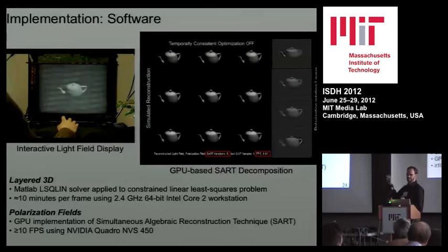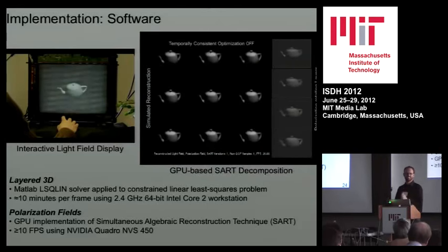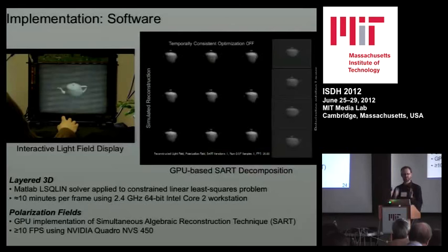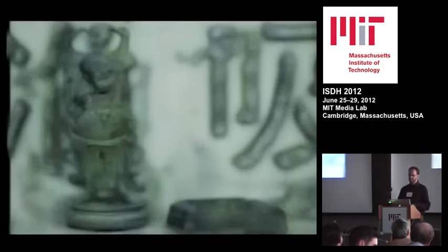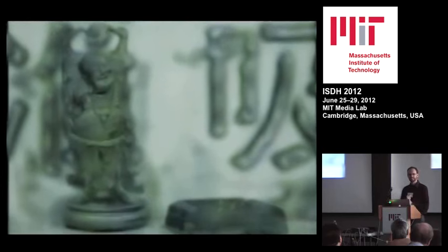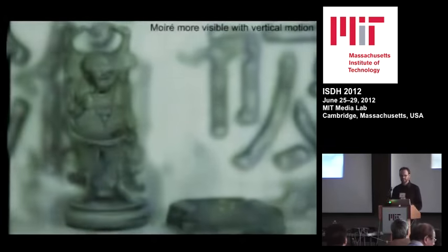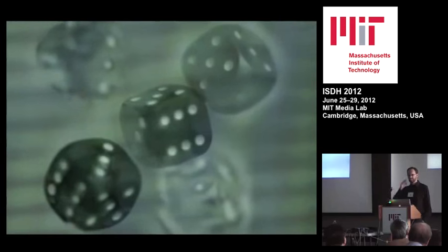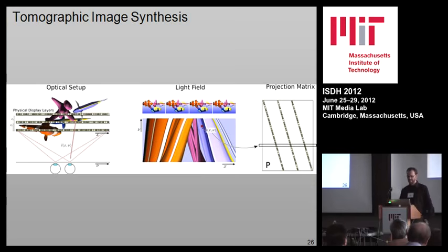We used an NVIDIA Quadro NVS450 — a sort of business-quality card — because it could drive four displays simultaneously, clock-synced, so we could get the same image at the same time on each display; they have to run in lockstep. The result achievable using that online solver is basically the same quality as the offline solver — no real downside. What you are seeing is a downside of the hardware though: moving vertically and horizontally shows differing degrees of moiré interference caused by the pixel grid of the LCD panels, something we'll address later.